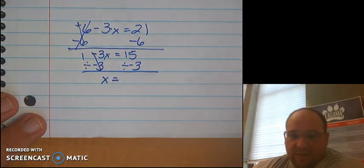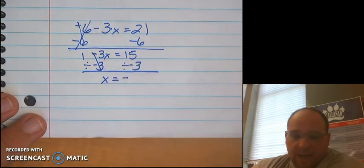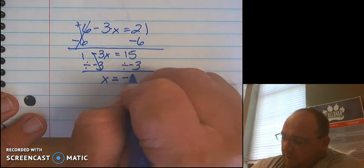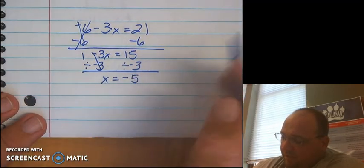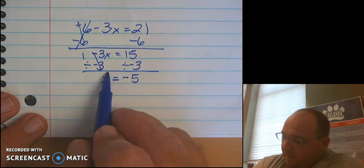So I'll go over here to the right side. 15 divided by negative 3. A positive divided by a negative gives me a negative. And 15 divided by 3 gives me a solution of 5. So now my complete answer is x equals negative 5.